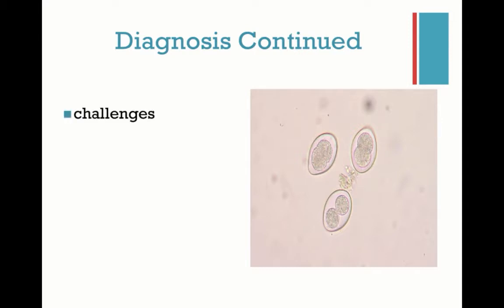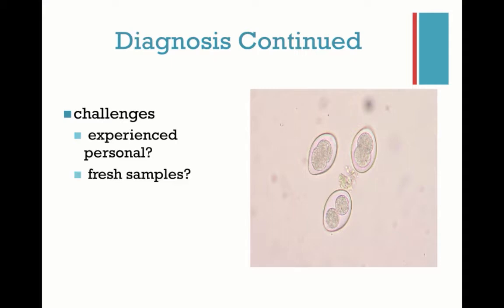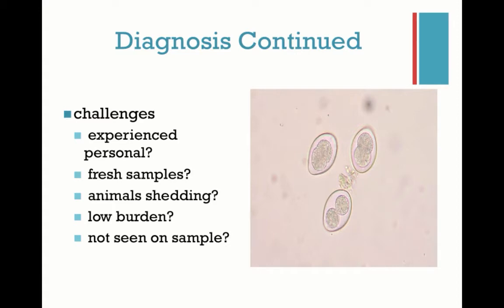So challenges to diagnosing it via fecal: you need an experienced person to look at this, and you need to be able to catch it when you know what you're looking at. You need fresh samples, ideally. The animal might not be shedding at the time that you take the fecal sample. They can have a low burden, so maybe on the slide you're looking at you don't have very many eggs and you miss them — it might not be seen on the sample.